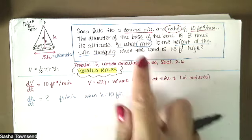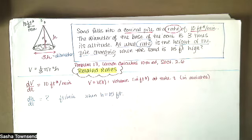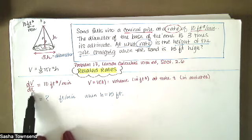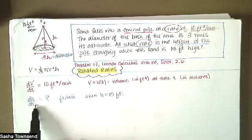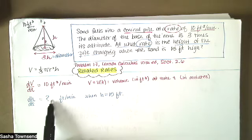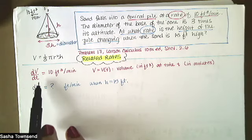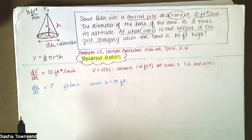The question asks: at what rate is the height of the pile changing when the sand is 15 feet high? This is where we get into related rates. These problems are called related rates problems because I know the rate of change of volume with respect to time and I want to know the rate of change of height with respect to time. I can find one rate given the other because I know how the volume and the height are related.